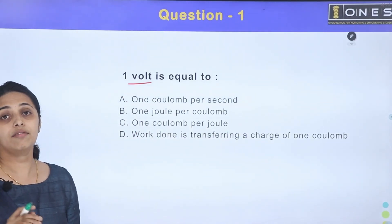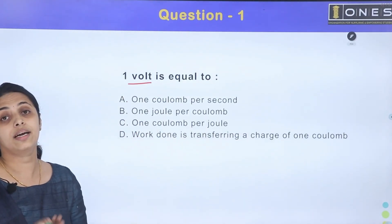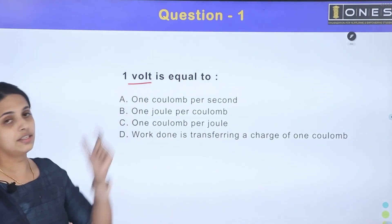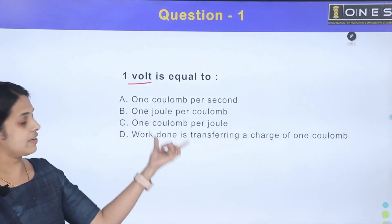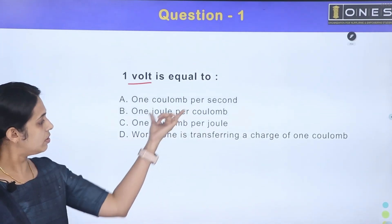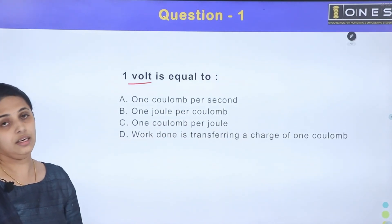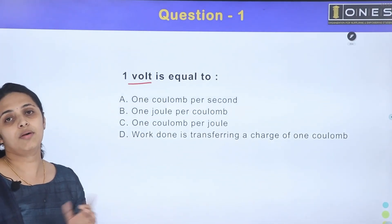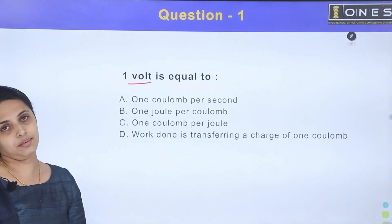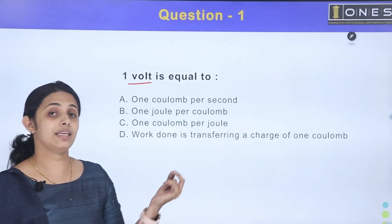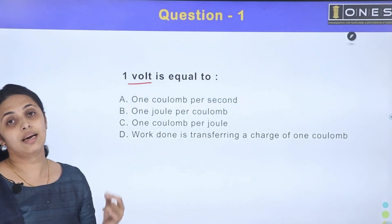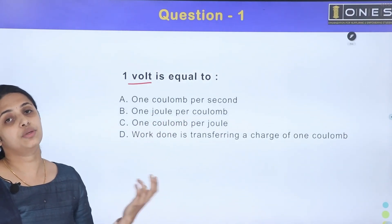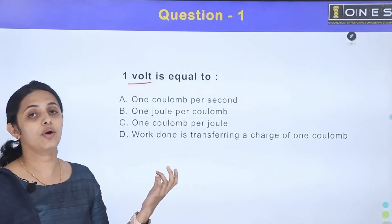1 volt is the unit of potential difference. When we study electric potential, we define the electric potential of a point as the work done in transferring a unit positive charge from infinity to that point.